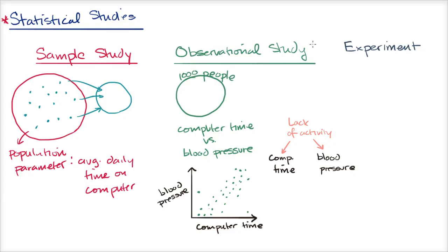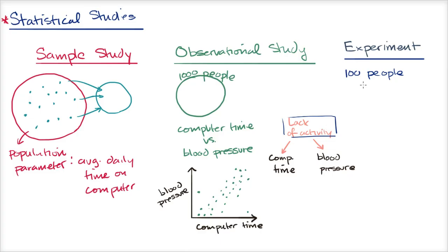Experiments are the basis of the scientific method and are all about trying to establish causality. If you wanted to do an experiment, you might take 100 people — experiments are in some ways the hardest of all these study types. To avoid having confounding variables introduce error, you randomly assign these 100 people into two groups. Random assignment is very important, because it makes it likely that each group will have similar distributions of confounding variables like activity level, so one group doesn't have a significantly different activity level than the other.